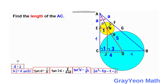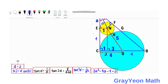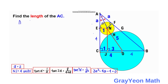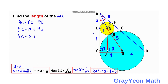For the final step, since we already have all parts of AC: AC equals AE plus EC. AE equals A, which has the value of 2, and EC equals NJ, which we found earlier to be 4. So the value of AC equals 2 plus 4, which equals 6 units.